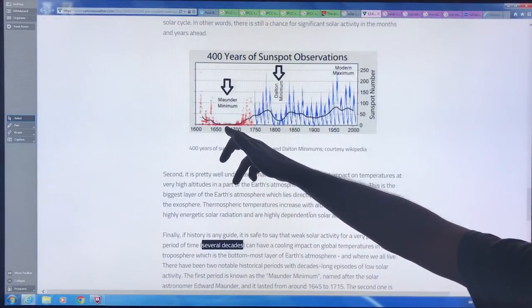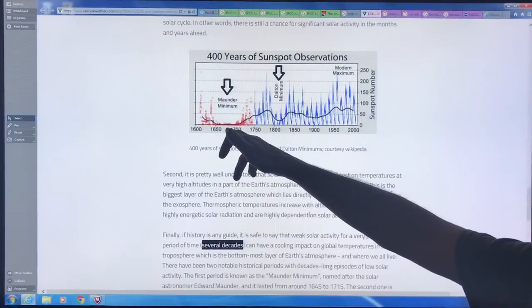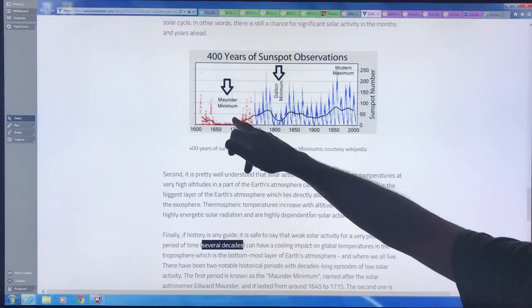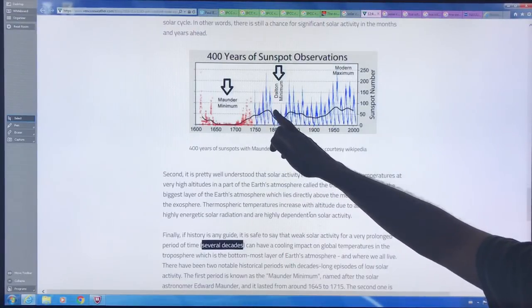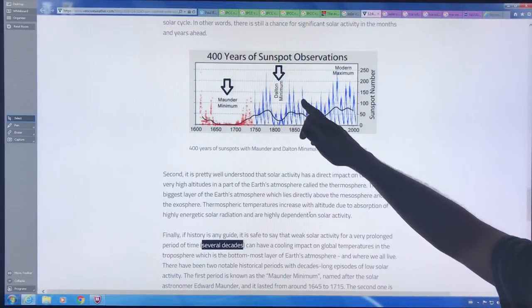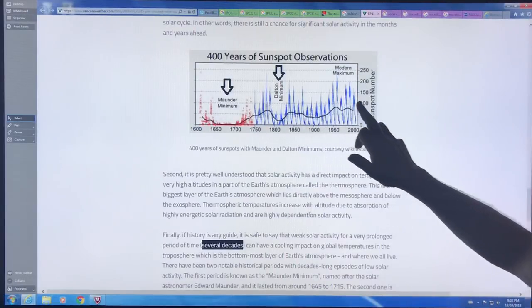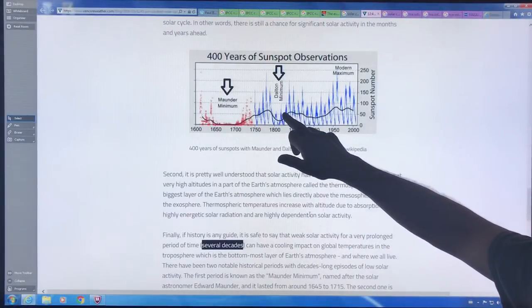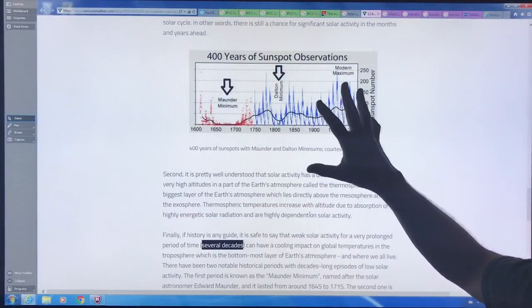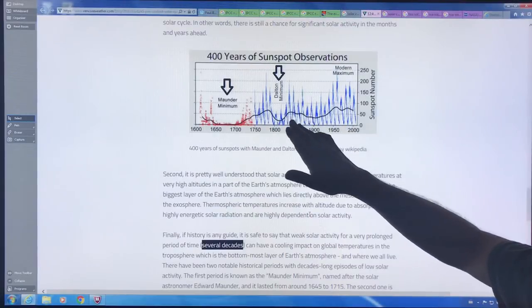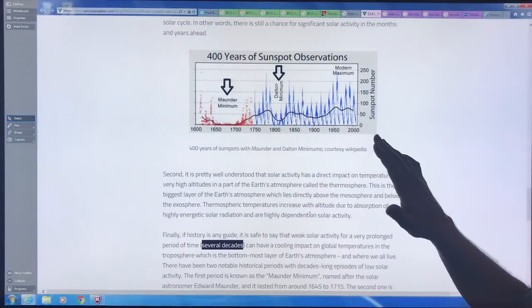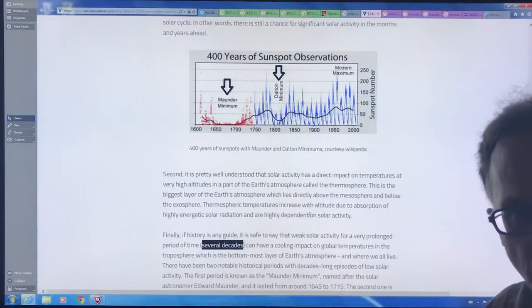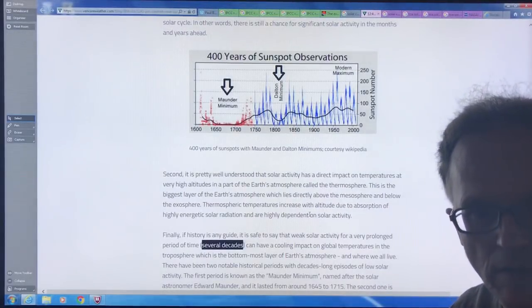This shows 400 years of sunspot observations, just counting the spots on the sun. We see there were very few sunspots here 1650 to 1700, this was the Maunder minimum, a bit cooler on the planet at that time. This is the Dalton minimum, we had the mini ice age in Europe. And then here we are with the sunspots now and it looks like we're heading to a slightly less active sun over time. But remember, these are 11-year cycles.